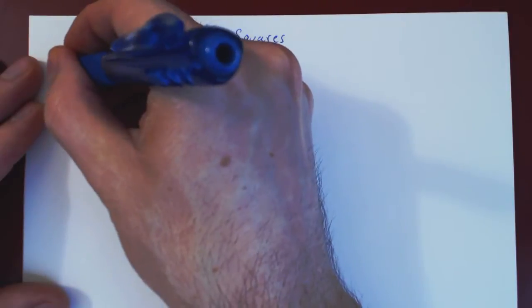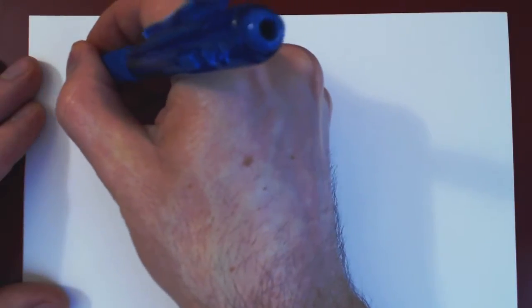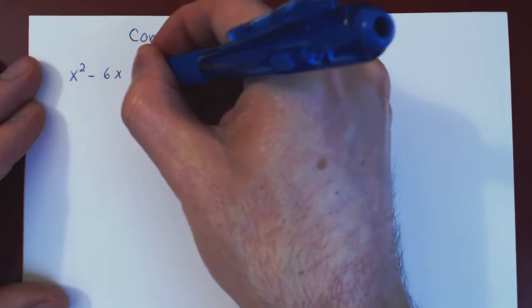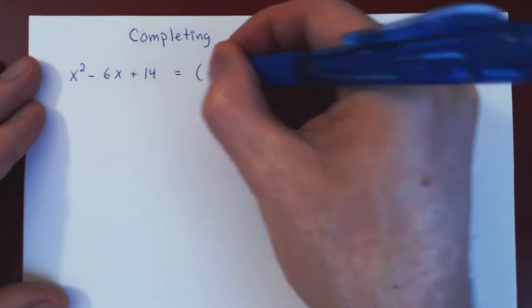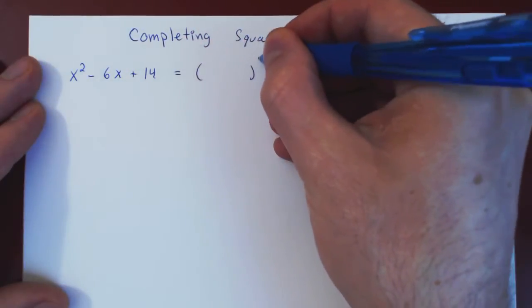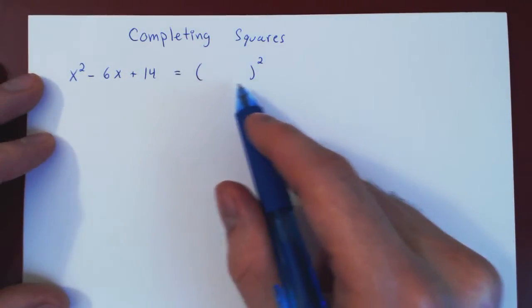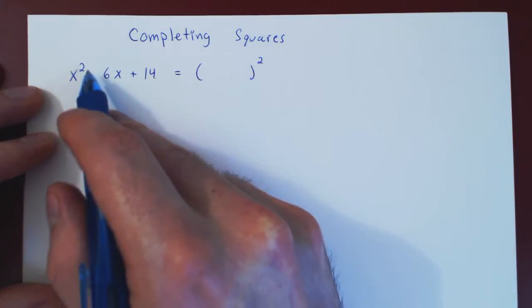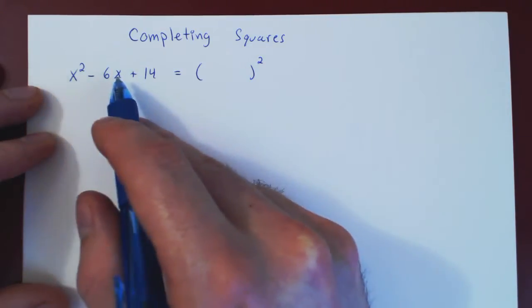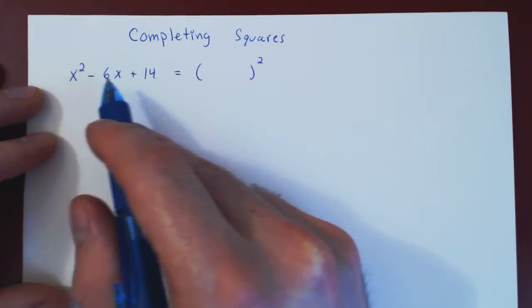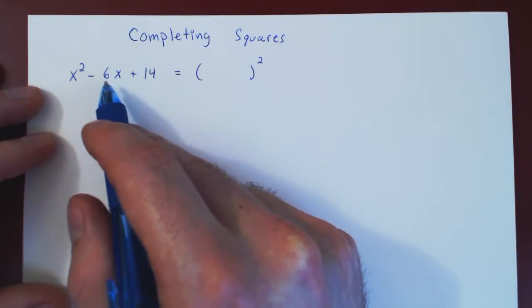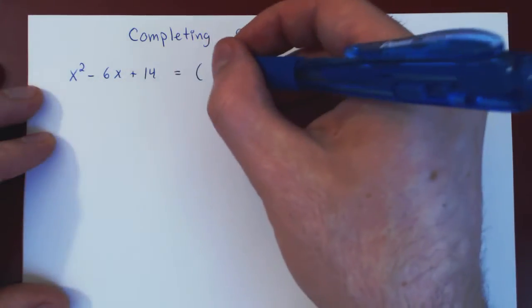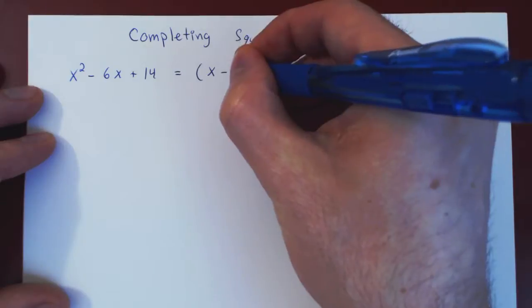Suppose we have the quadratic polynomial x squared minus 6x plus 14. Can we square a linear polynomial that will result in exactly the right quadratic term and the right linear term? And of course here, as twice of negative 3 is negative 6, it's simply x minus 3.